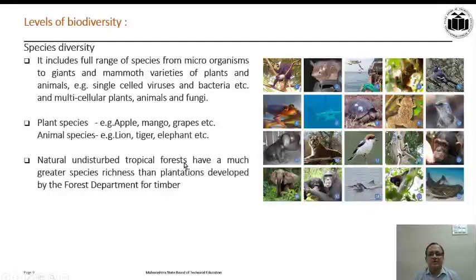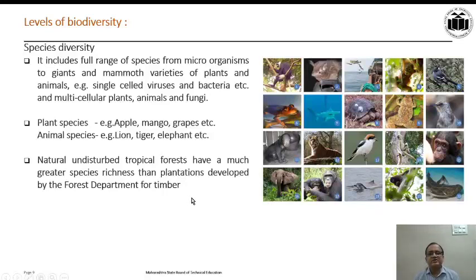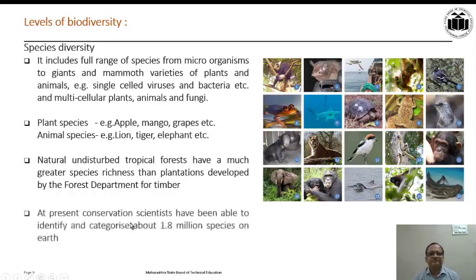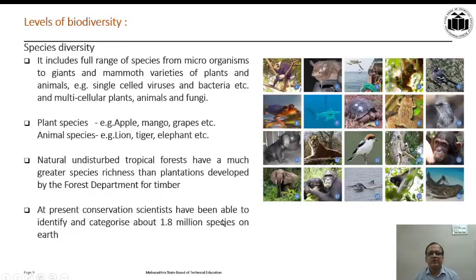Natural undisturbed tropical forests have much greater species richness than plantations developed by the forest research department for timber. Naturally grown forests have a wide range of plant and animal species, whereas plantations done artificially by human beings can have only a few species. At present, conservation scientists have been able to identify and categorize about 1.8 million species on the earth. A picture showing the number of species that exist on the surface of the earth has been provided here.